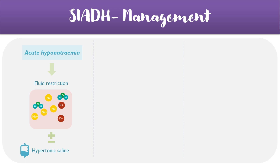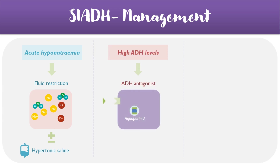Secondly, it's important to deal with the high levels of ADH circulating through the blood, and this may be achieved by using ADH antagonists such as Tolvaptan, which basically block the receptors on the collecting ducts, preventing ADH from binding and therefore preventing the aquaporin-2 channels from fusing with the cell surface membrane, allowing for reduced water reabsorption back into the blood.